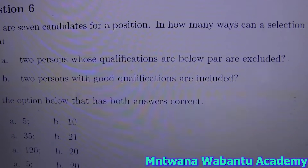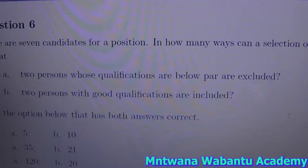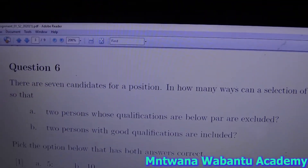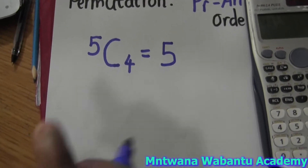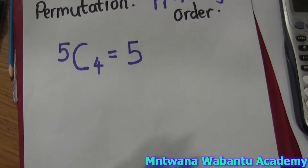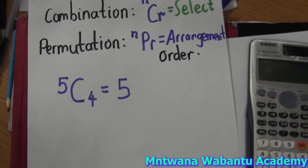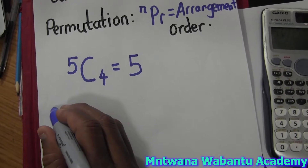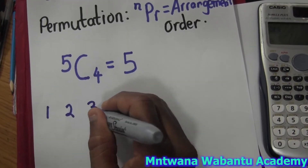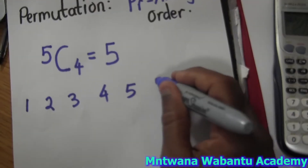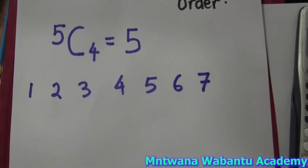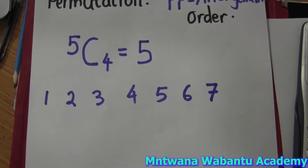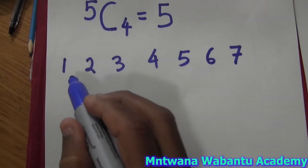For the second part, the two candidates with good qualifications are included - meaning they must always be in the selection. So we're picking four from all seven, but these two must always be included. I'm going to write all the candidates: let's call them one, two, three, four, five, six, seven. I want four from them and I want to see how many ways I can combine them.